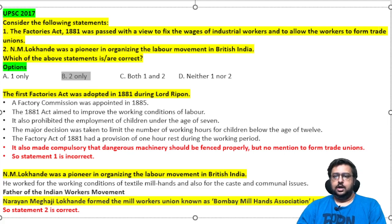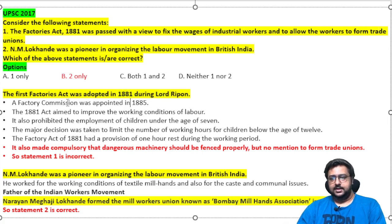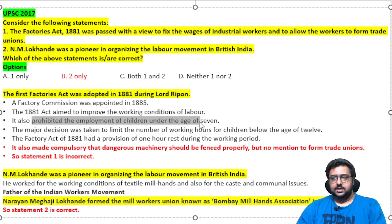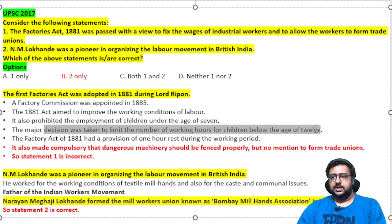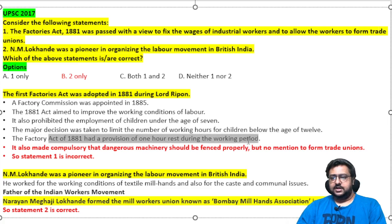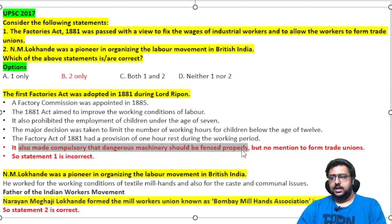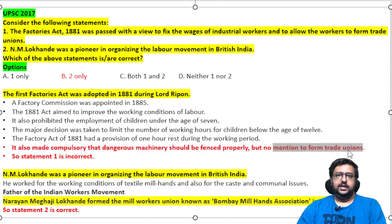The answer is Statement 2 only. The first Factory Act was formed in 1881 under Lord Ripon, and a Factory Commission was appointed in 1885. This act was to improve the working conditions of labor — it prohibited employment of children under the age of seven, limited working hours for children below 12, had a provision of one hour rest during the working period, and made it compulsory that dangerous machinery be fenced properly. There is no mention of trade unions anywhere, so Statement 1 is incorrect.